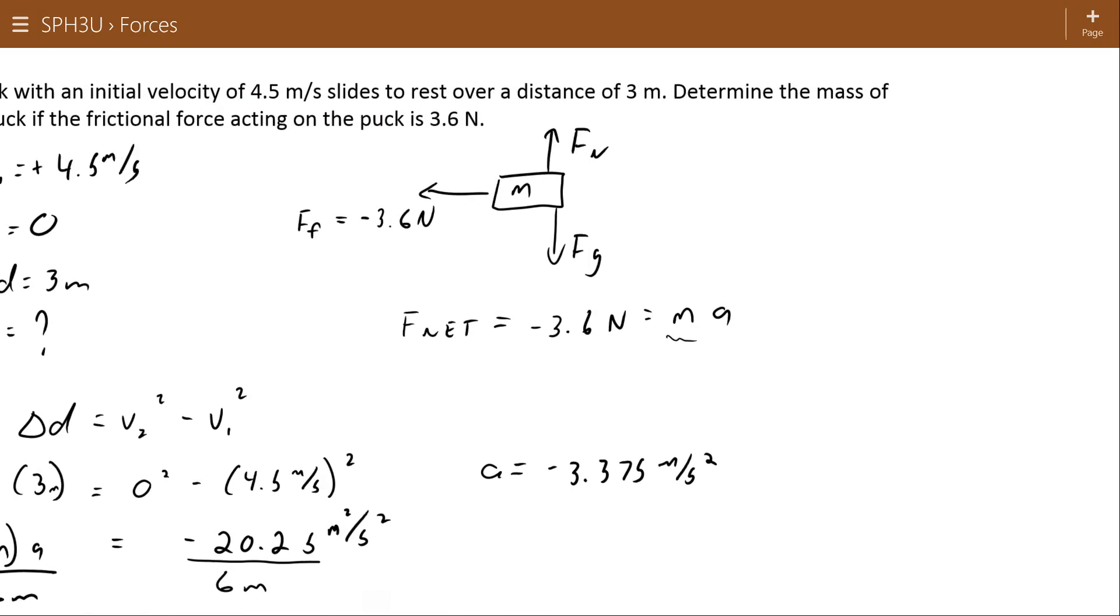Okay, with that acceleration I can stick it into my expression for Newton's second law here. And if you'd forgotten a negative on either of the two situations in which I mentioned that you have to be careful that things stay negative, then when you went to put this number into this equation, you would have gotten a negative mass. That should be a pretty good indicator to you that you've lost a negative somewhere during the problem. Dividing both sides by 3.375, we're going to end up with a mass of that puck of 1.1 kilograms.